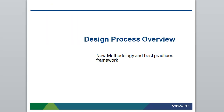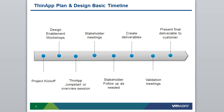Let's get into the design process overview — new methodology and best practices framework. Here's a quick timeline of what a plan and design engagement looks like. With every project, you've got a kickoff which leads into design enablement workshops, anywhere from one week to two days depending upon the customer and scope. During these workshops, you're doing interviews with stakeholders and team members, which transitions into a ThinApp jumpstart or overview session. Sometimes customers acquire the ThinApp technology and jump right into a project.